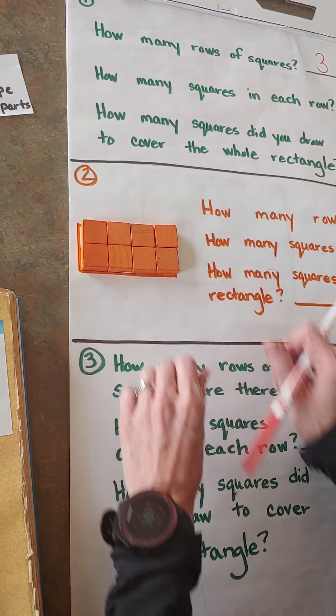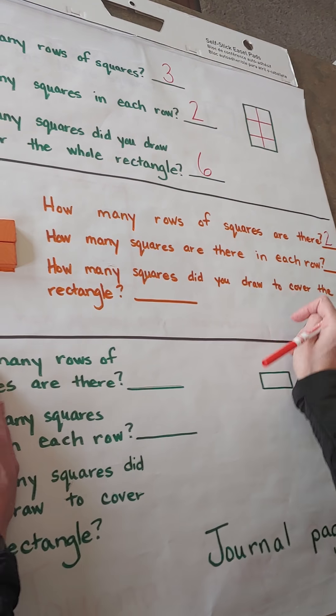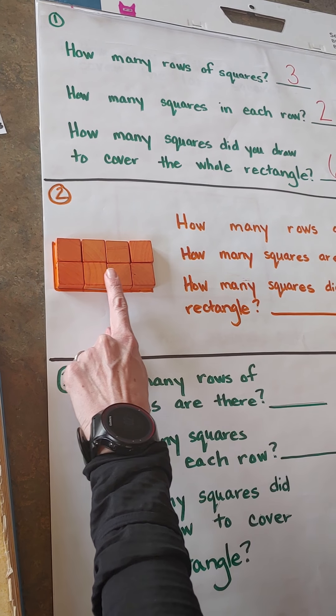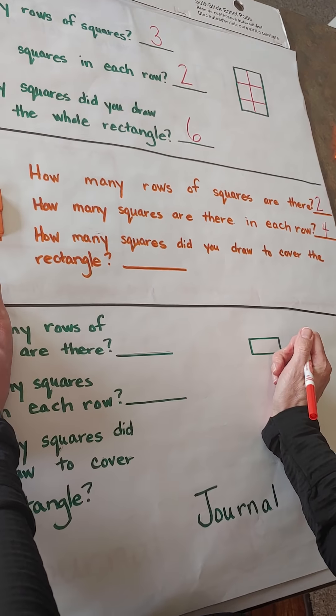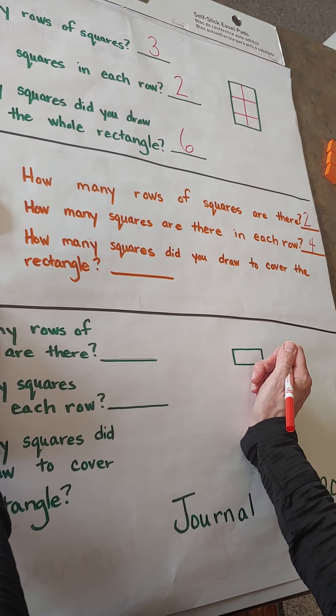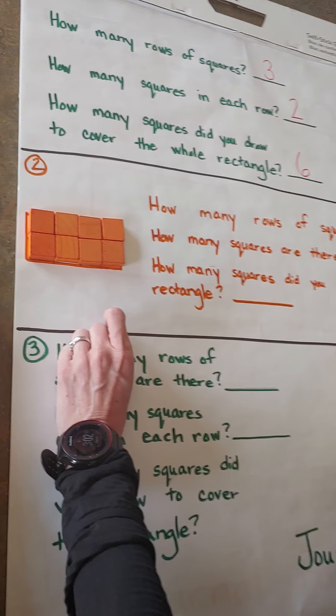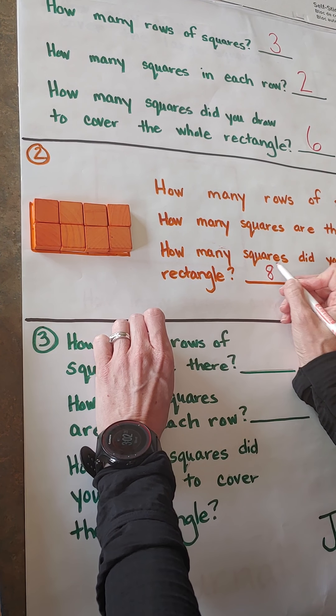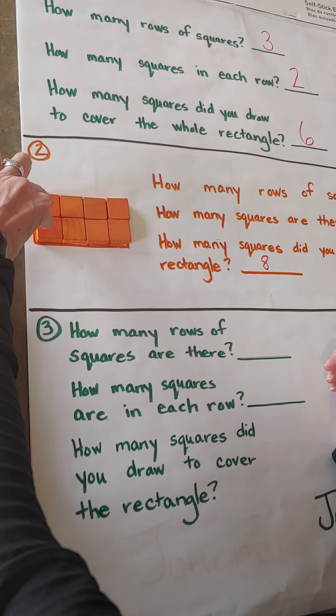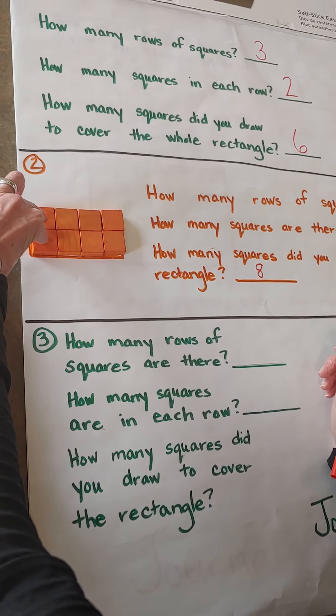How many squares are there in each row? One, two, three, four. How many squares did you draw to cover the rectangle? I can count individually: one, two, three, four, five, six, seven, eight. Or I could count in twos: two, four, six, eight. Or I see four and four — and that's a double. I know four and four is eight. I could do either one there.